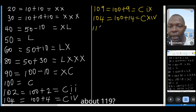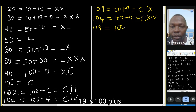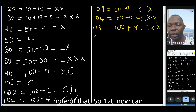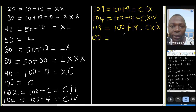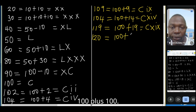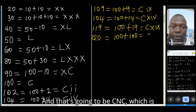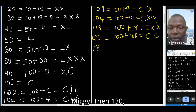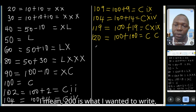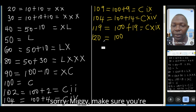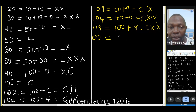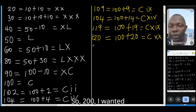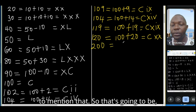One fourteen is 100 plus 14, which is C then XIV. One nineteen is 100 plus 19, so that's C then XIX. One twenty is 100 plus 20, which is CXX. Make sure you're concentrating, Migi.